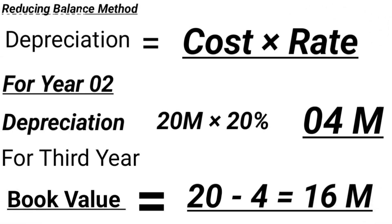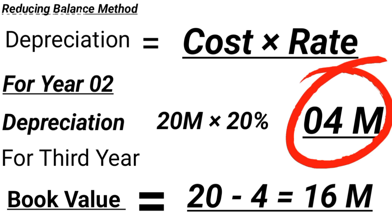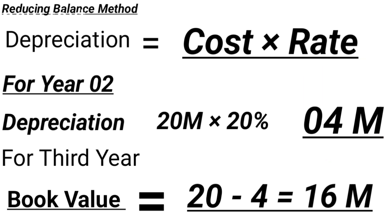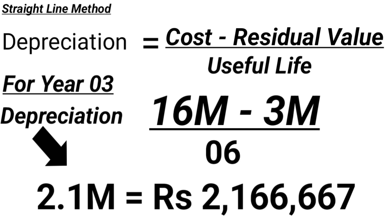For the second year, we again apply reducing balance method. Cost is 20 million multiplied by 20%, so second year depreciation equals 4 million. 20 million minus 4 million equals 16 million — this is the remaining value for the third year. Now for the third year, the company shifts to straight line method. Straight line formula: cost minus residual value over useful life. Remaining value after two years is 16 million minus 3 million over 6 years.